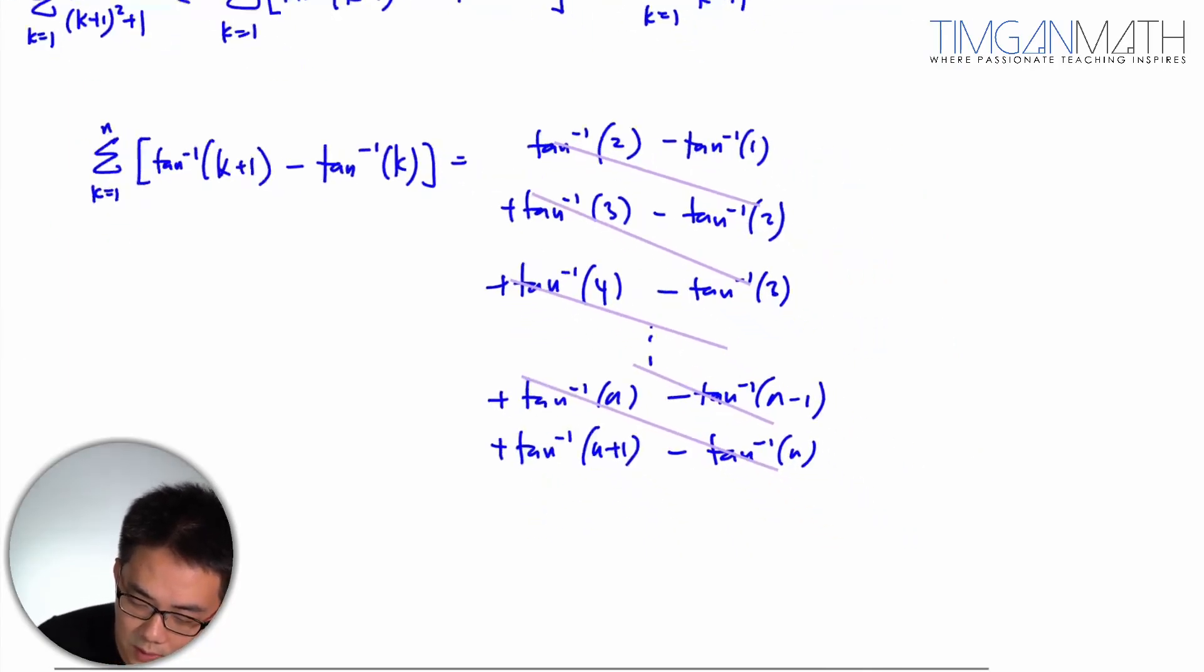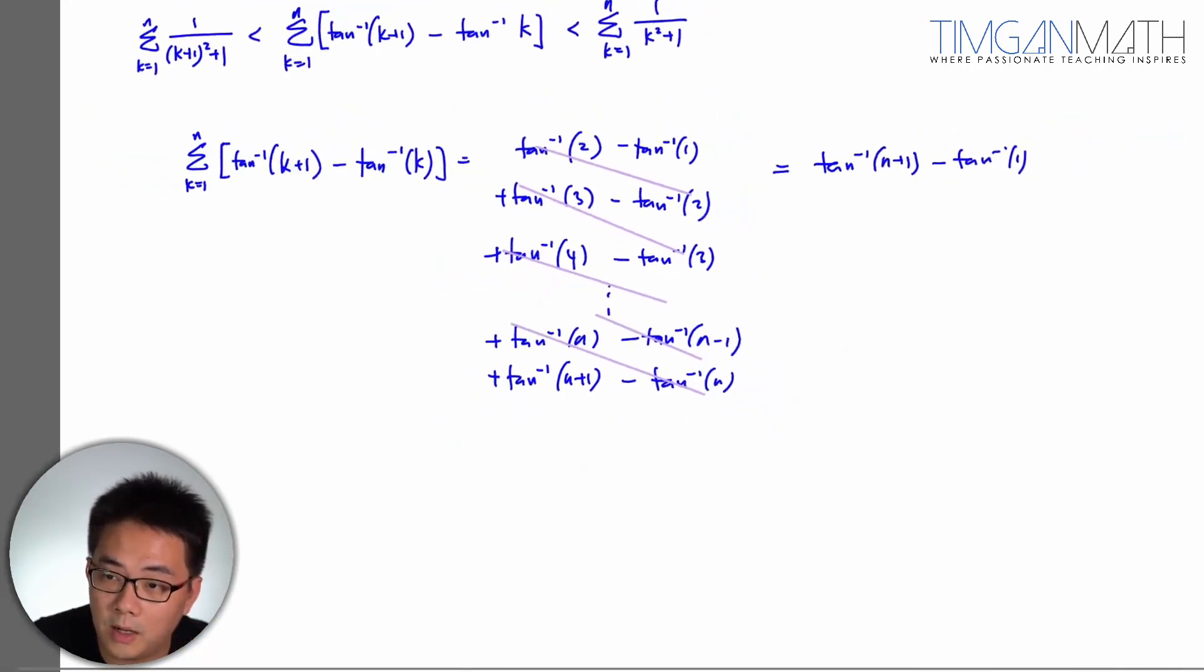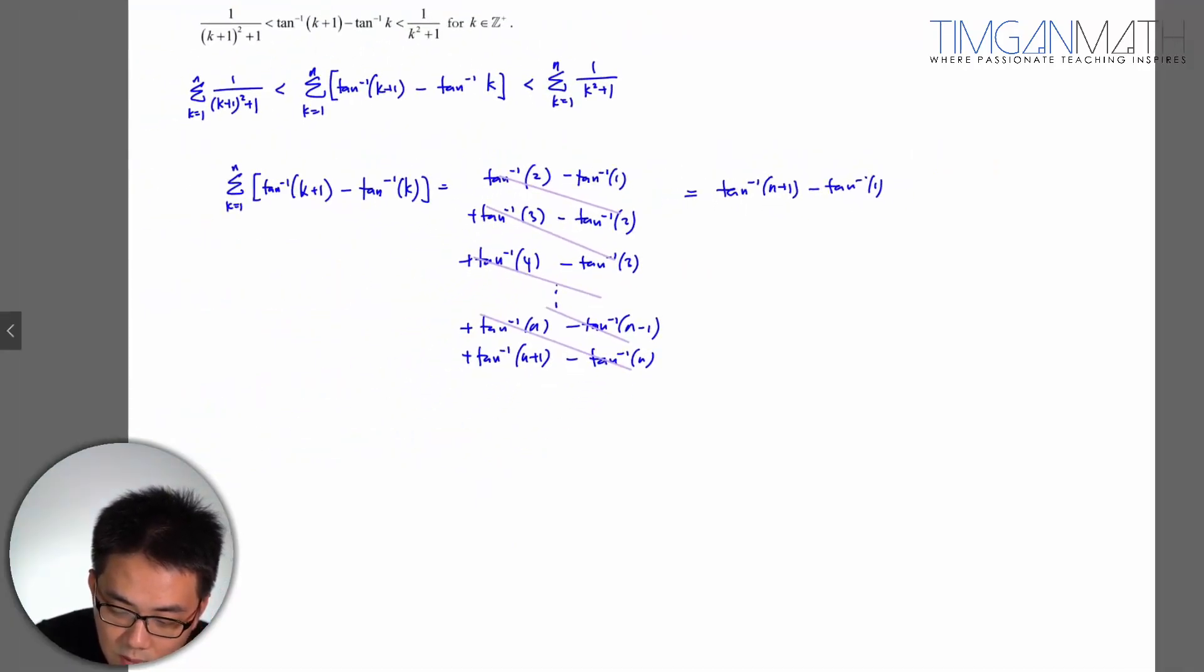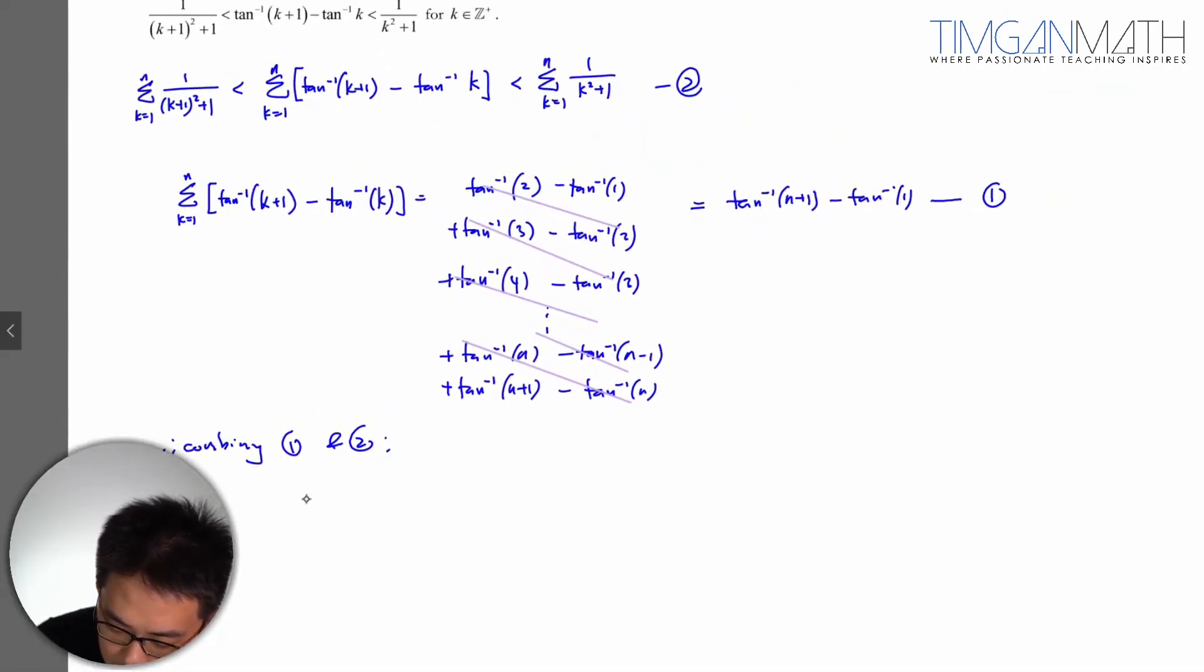And once this will just give us tangent inverse n plus 1 minus tangent inverse 1. Tangent inverse 1 will be pi over 4, but anyway, we just leave it as is first because we need to use the second equation here. So once this is done, we're going to take this and combining 1 and 2, we get the middle would be tangent inverse n plus 1 minus tangent inverse 1 less than the summation k squared plus 1.